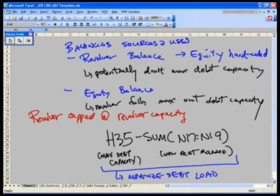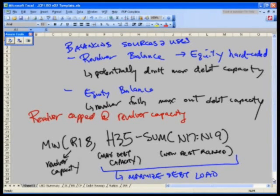But, we did have a switch in there, if you recall, that said you can't borrow more than that 1500 bucks on your revolver. So we're going to say, give me the minimum of R18, my maximum capacity on my revolver. This way, what we are saying is, if this maximum debt load amount blows through your capacity, then basically, just borrow what you can on your capacity. And then, the equity will balance everything.